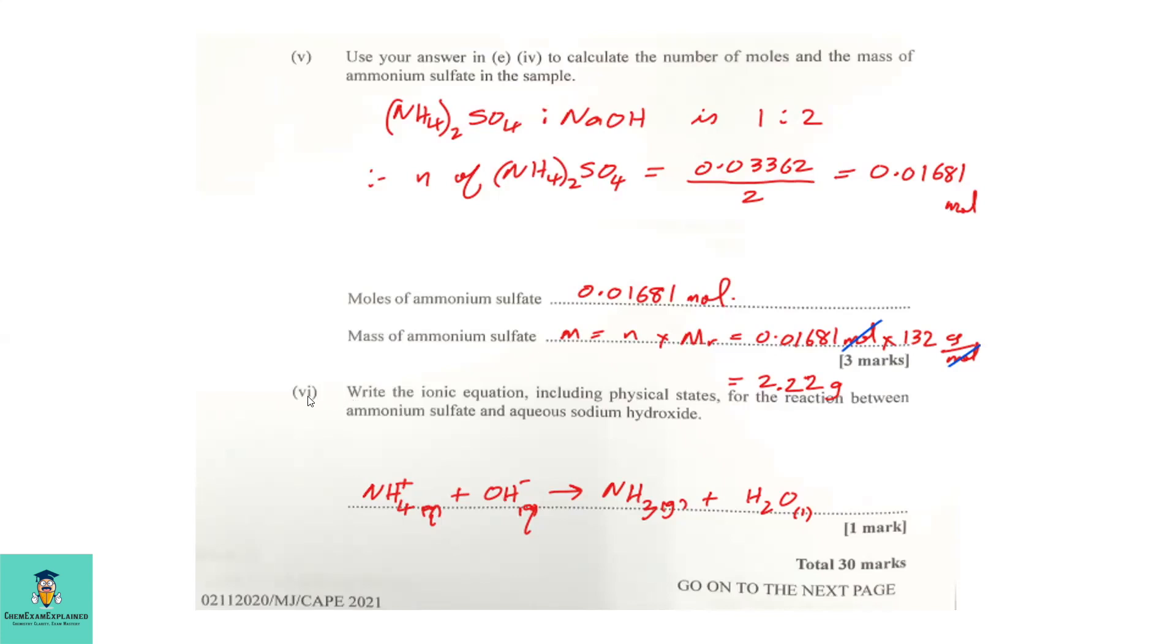Now, part 6 is requiring us to write the ionic equation, including the physical states for the reaction between ammonium sulfate and aqueous sodium hydroxide. So, the formula for ammonium ion is NH4 plus, plus hydroxide ion to give you ammonia gas and water. So, ammonium ion is aqueous. The hydroxide ion is also aqueous. It produces ammonia gas and water.